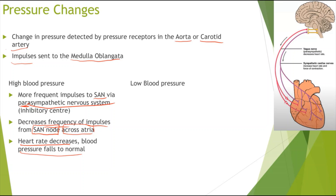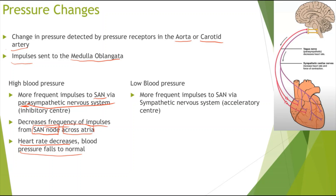So now, if there were to be low blood pressure: again, more frequent impulses would be sent to the SAN via the medulla oblongata, but in this case via the sympathetic nervous system. Remember, S is for stimulating the heart rate, so in this case we want to increase it.